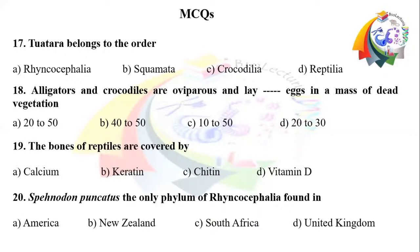Question number 18: Alligators and crocodiles are oviparous and lay a dash number of eggs in a mass of dead vegetation. Option A: 20 to 50. Option B: 40 to 50. Option C: 10 to 50. Option D: 20 to 30.